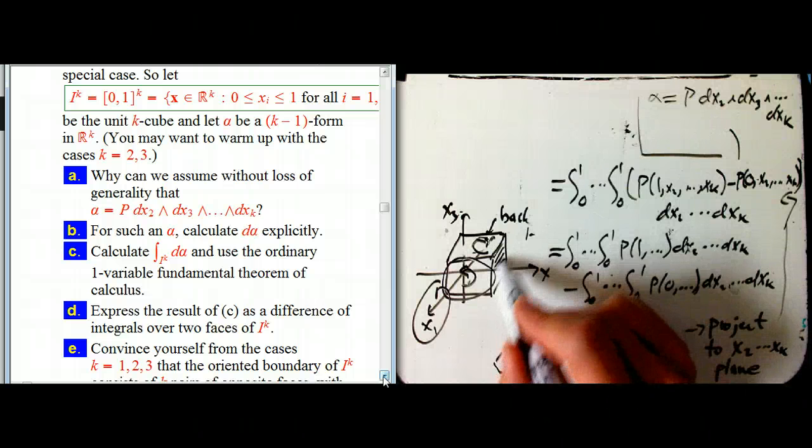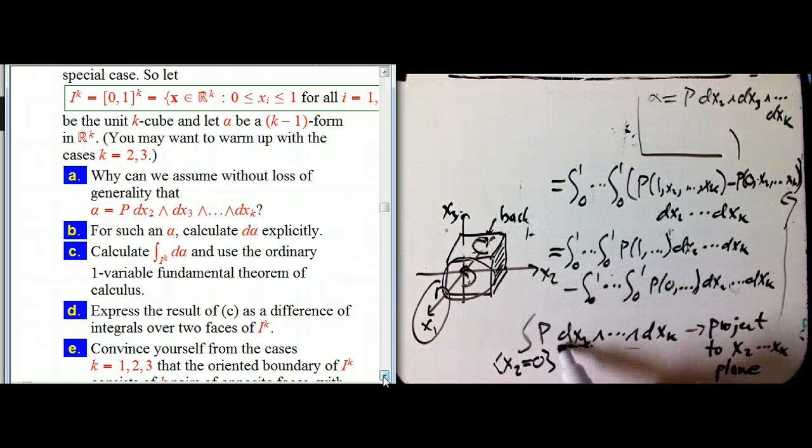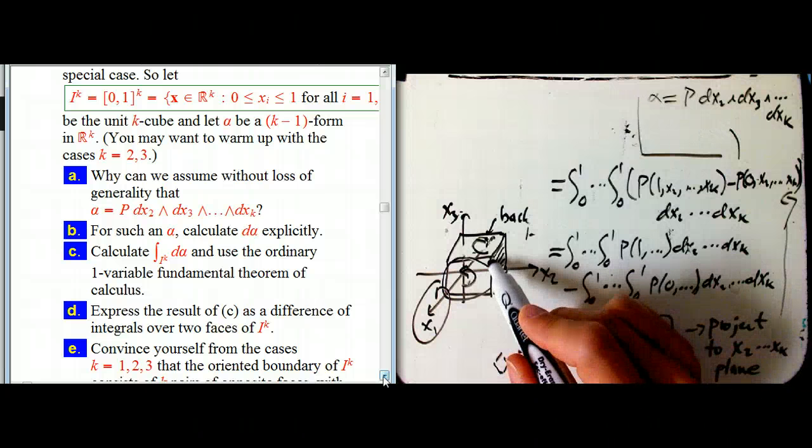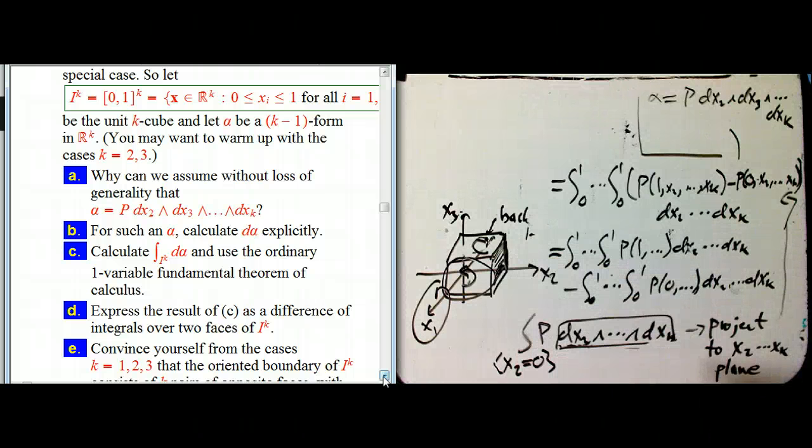So for example, here, this face is where x_2 is equal to one. If I'm going to do an operation like integrate dx_2 dx_3, for example, I'm going to be projecting that onto a subset that has zero area. And so all those are going to die. So the other faces die.